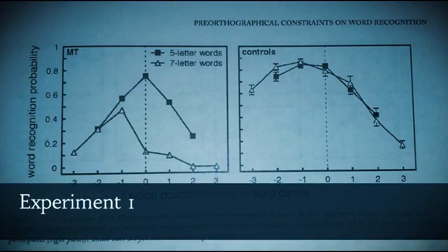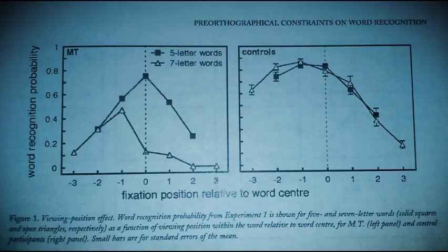Experiment number one, the viewing position effect, investigated MT's printed word recognition. The two factors that determine this effect are letter legibility and lexical constraints on word recognition.